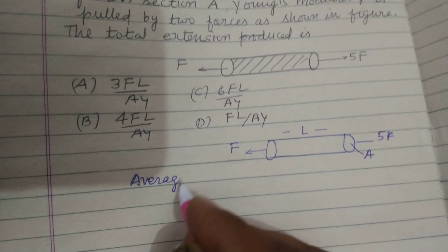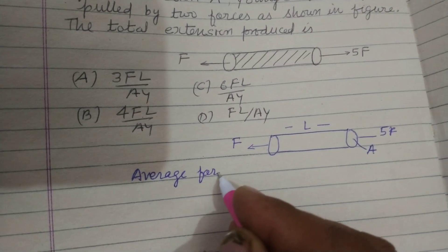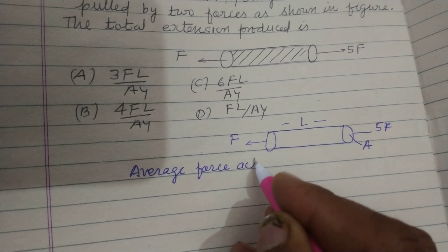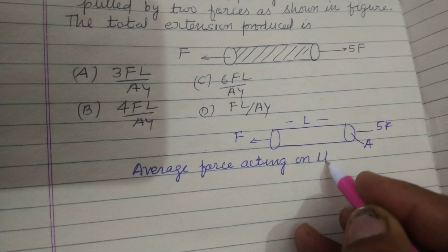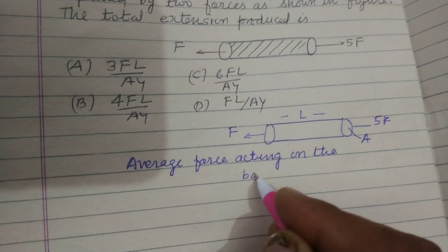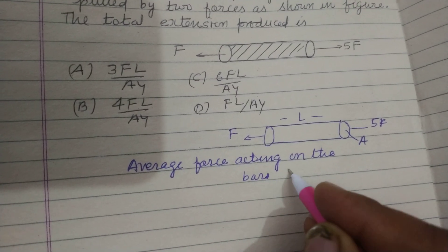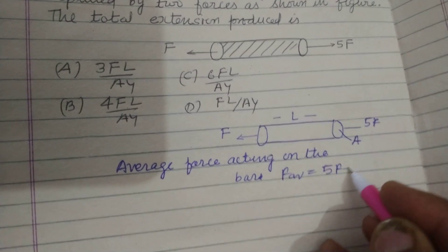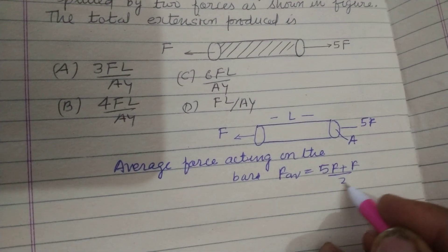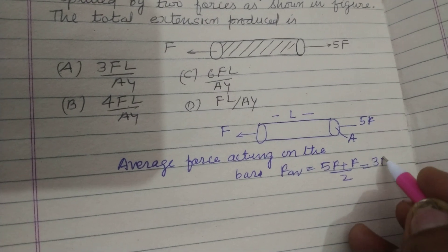So average force acting on the bar, F average is equal to 5F plus F by 2. So this is 3F.